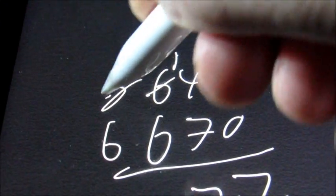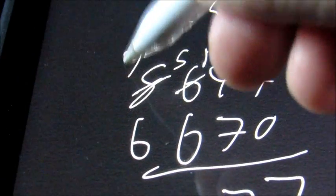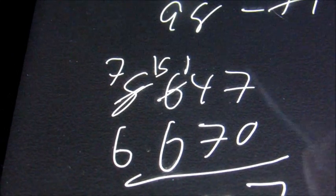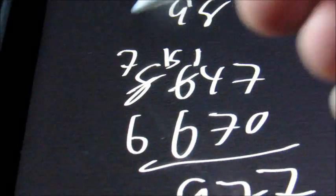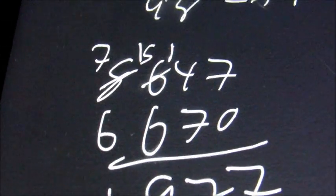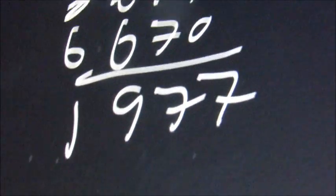And then we have 5 minus 6, so we need to borrow 1 from here. This becomes a 7. This becomes a 15. So 15 minus 6 is 9. And 7 minus 6 is 1. So the answer here is 1,977.